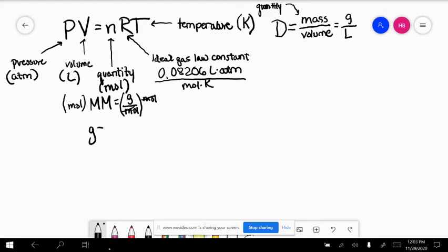So grams is equal to the molar mass, which is in grams per mole, times the number of moles, like such. So I can also say that moles is equal to grams divided by molar mass.